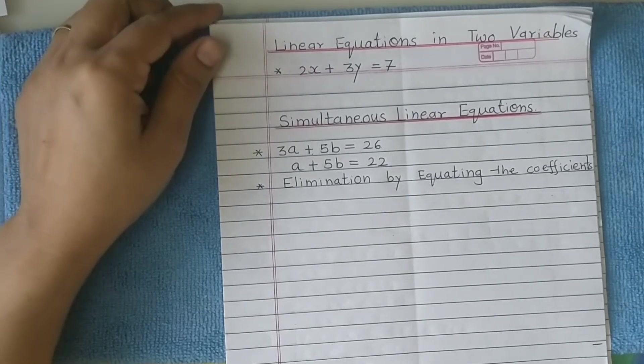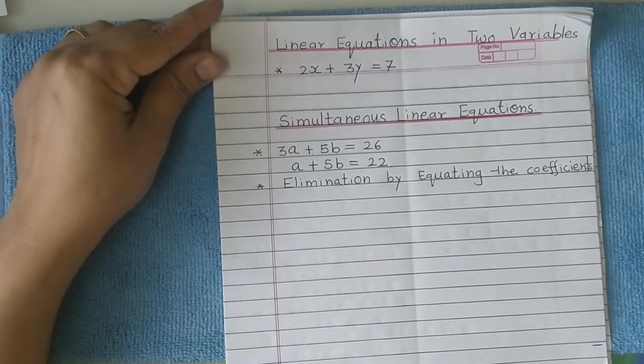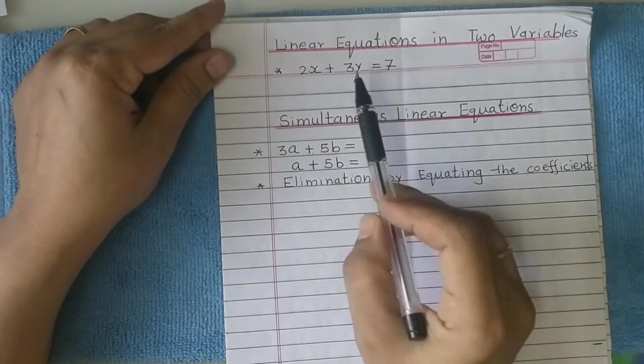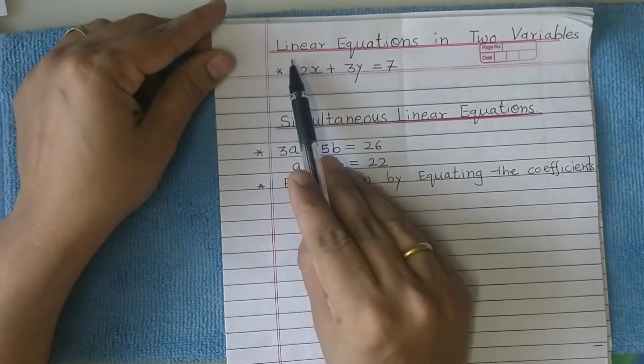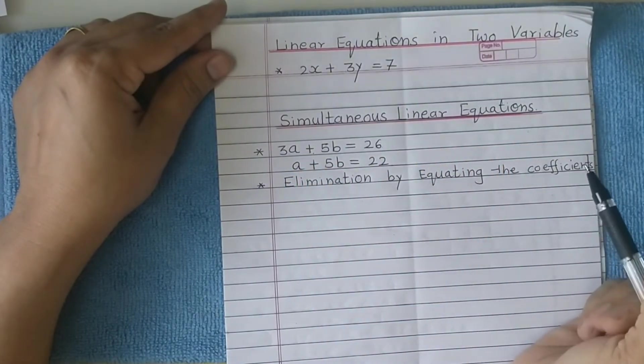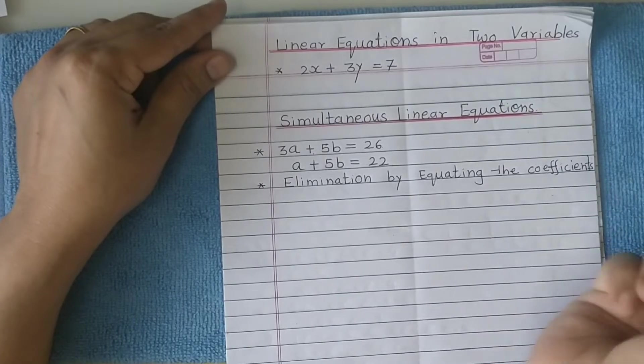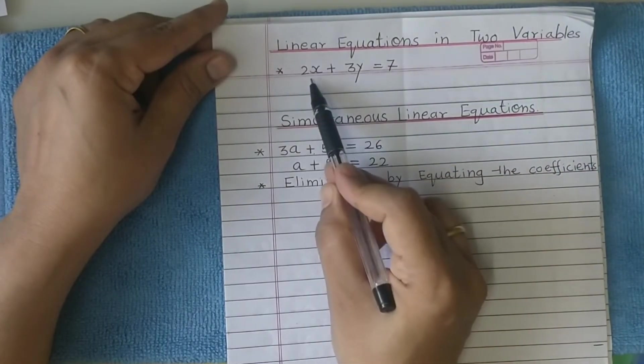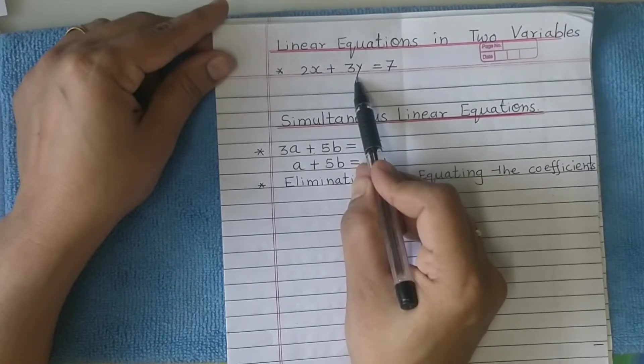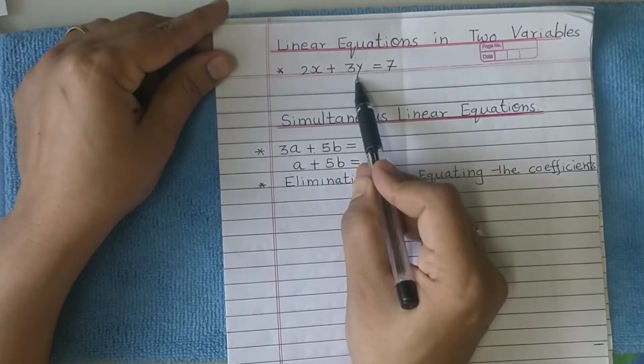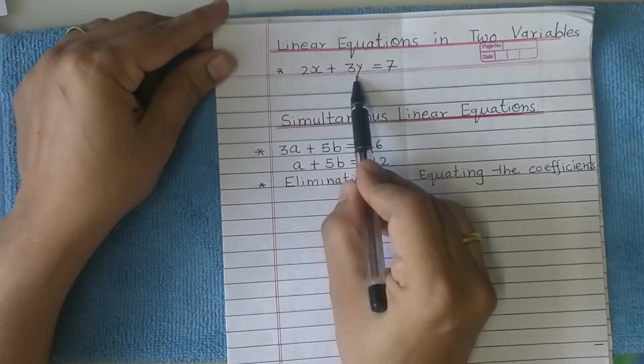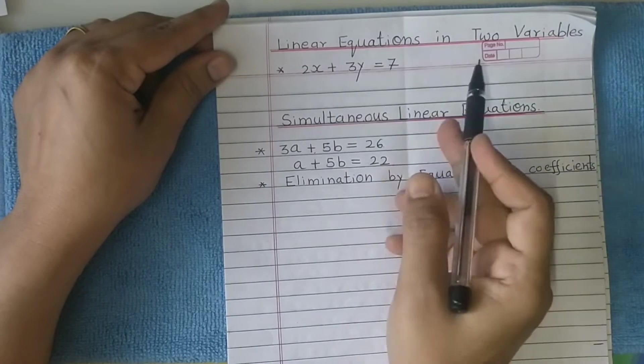Hello children, how are you all? Hope everybody is safe at home. Today we shall start the first topic, Standard 10 Mathematics Part 1: Linear Equations in Two Variables. You already have an idea - an equation having two variables with degree 1 is called a linear equation in two variables. For example, 2x plus 3y equals 7 is a linear equation in two variables x and y.